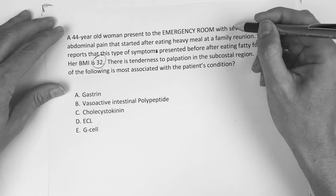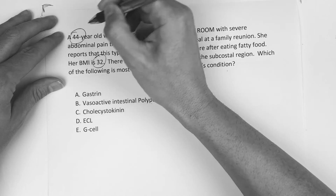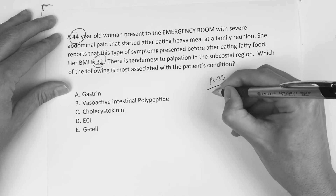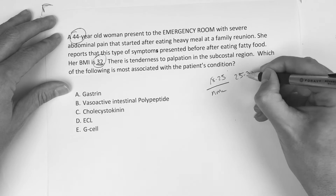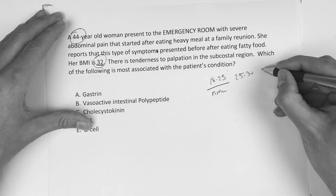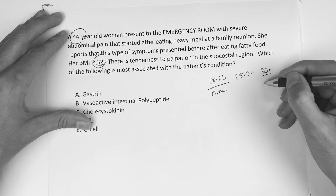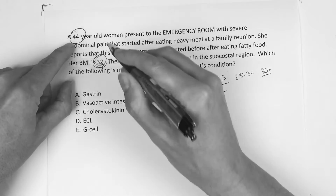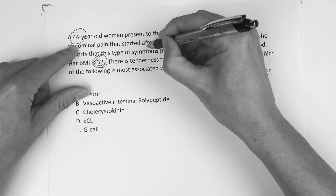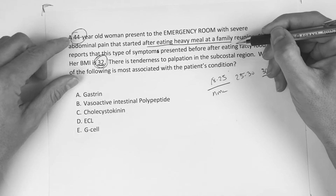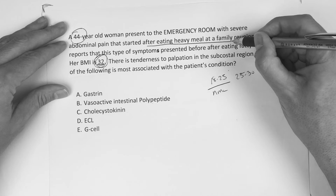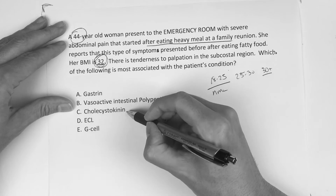That whole female with BMI 32 — what's normal BMI? 18 to 25 is normal, 25 to 30 is overweight, and 30 plus is obese. Her BMI is 32, so she's obese. She's having difficulty with fatty meals. What do we need to process a fatty meal? The gallbladder has to kick in. Which answer choice is associated with the gallbladder and processing fatty foods?